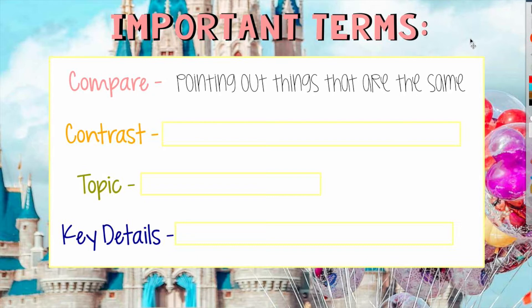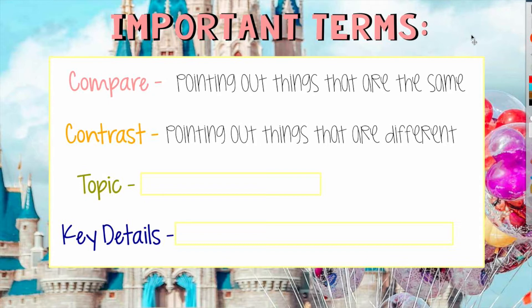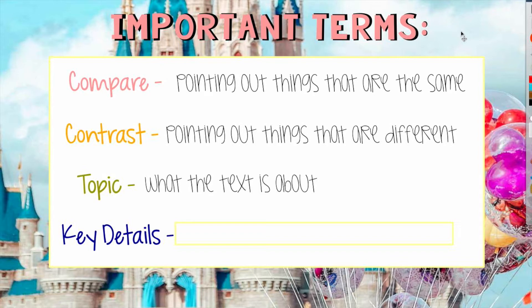The next term is contrast. Whenever you are contrasting something in two texts, you are pointing out things that are different. For example, these can be different things mentioned in one text that weren't mentioned in the other. The third term is topic. A topic is what the text is about. In this case, the topic in our two texts is Walt Disney.